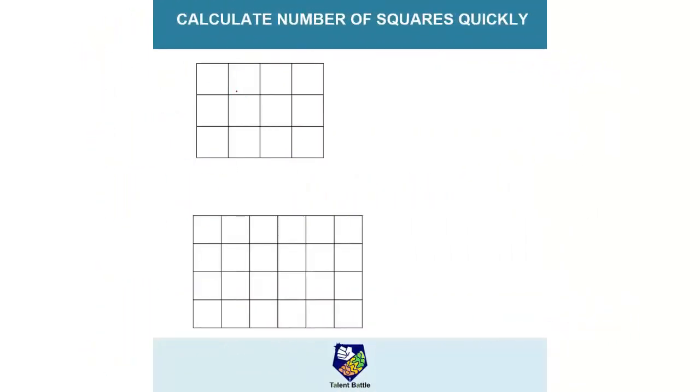Let's check how we can calculate the number of squares in any given particular figure. So first you need to calculate the number of columns. So in this case 1, 2, 3 and 4. So 4 columns. And number of rows 1, 2 and 3. So 3 rows. So 4 multiplied by 3. Now just reduce the number of columns by 1 and reduce the number of rows by 1. So this will become 3 into 2.